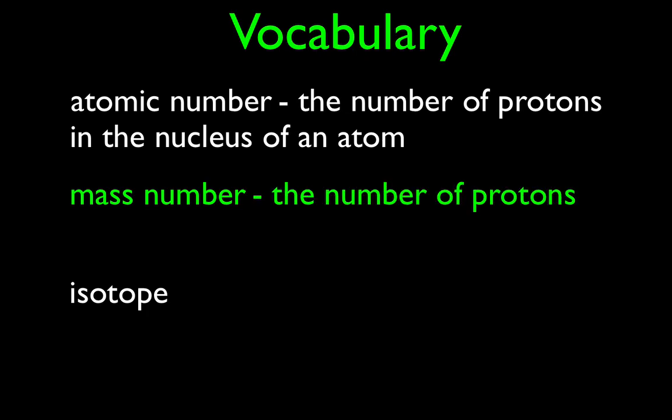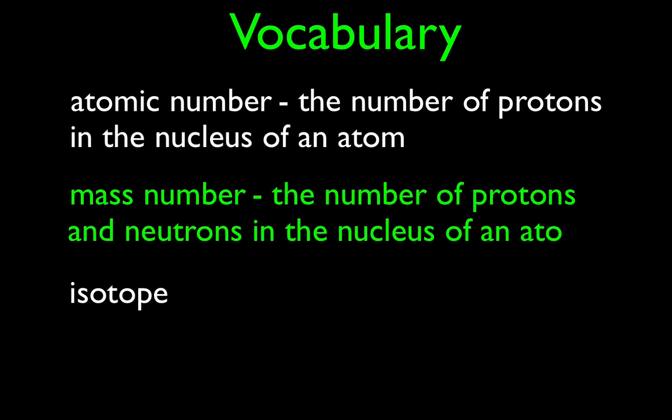Mass number is the number of protons and the number of neutrons added together that are in the nucleus of an atom. Again, it can only be a whole number — 1, 10, 20, 100, 210 — something like that. It's going to be a whole number. You add how many protons and how many neutrons together to get the mass number. Now, as I mentioned in Part 1, the mass number is not the mass of something. It's not the mass of an atom or the mass of a proton. It is the mass number.